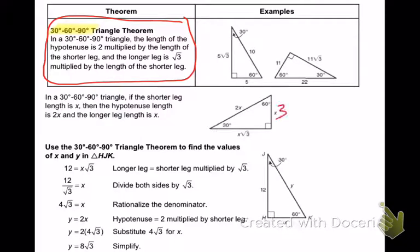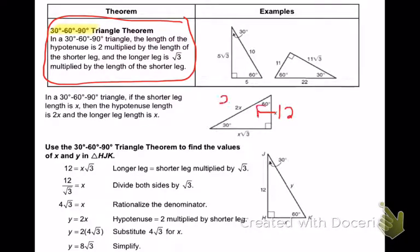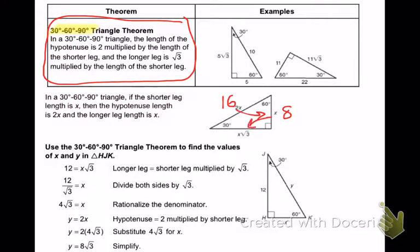If the short side is 3, the hypotenuse is 6 and the long side is 3 square root of 3. If the short side is 12, the hypotenuse is 24 and the long side is 12 square root of 3. If the hypotenuse is 16, the short side is 8 and the long side is 8 square root of 3.